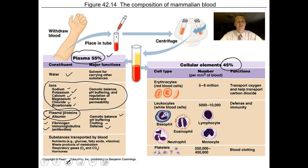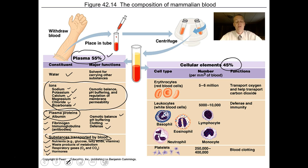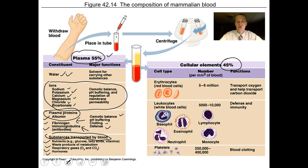Other substances transported by blood in the plasma include nutrients, waste gases and waste products, respiratory gases like oxygen and carbon dioxide, and hormones. What plasma banks are paying people for is the clotting factors — fibrinogen and the antibodies. When you donate plasma, they take out the liquid part of your blood and put back the cellular part.